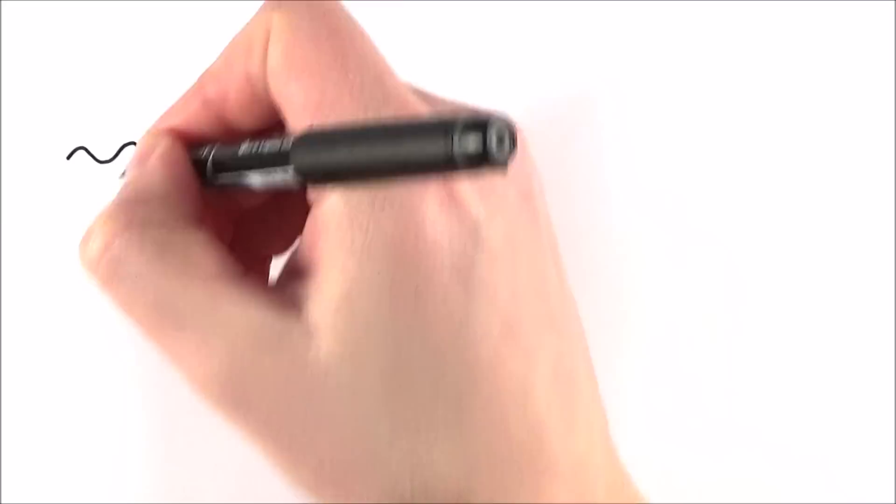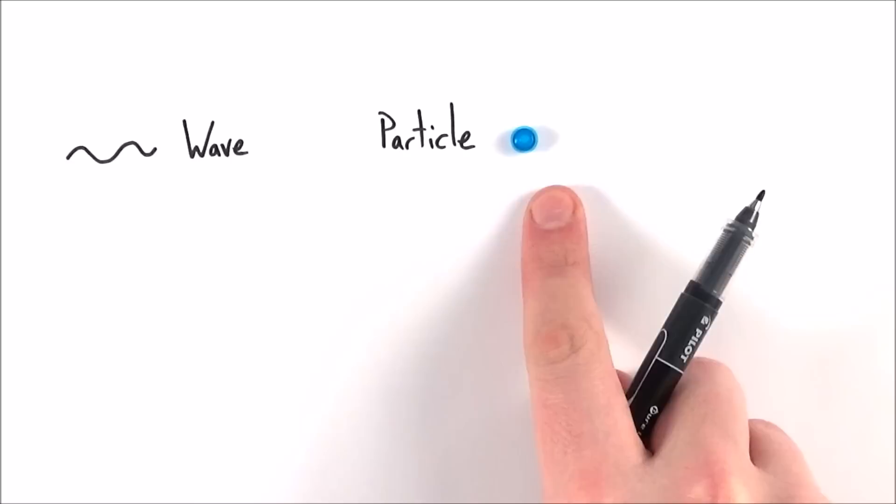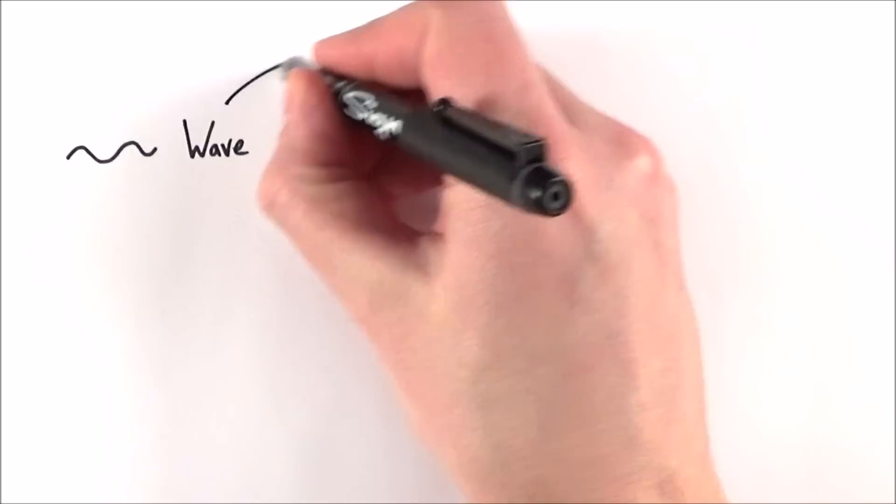In order to try and model what we observe, sometimes the wave model seems to work and this explains things like refraction and interference. But other times we need to think about using the particle model to explain what's going on, and this might be, for example, where we have the photoelectric effect.